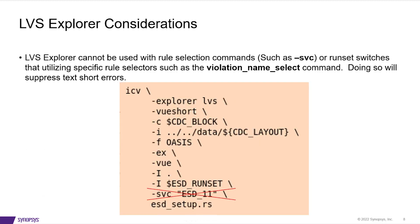One thing to consider when setting this up: LVS Explorer cannot be used with rule selection commands such as "-svc", or run set switches that utilize specific rule selectors such as those which utilize violation name select commands. Doing so will suppress text short errors. For this reason, it's recommended that LVS Explorer be run on a simpler PERC flow such as a topology check, which usually does not utilize these commands.